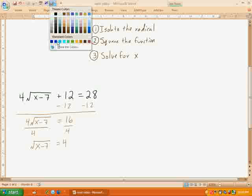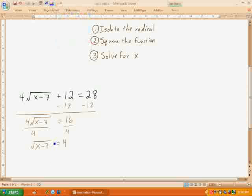And now since the radical is all by itself, that means I'm going to do step number 2. I'm going to square the function. So I'm going to square both sides. So again, the square root and the square term will cancel each other out because they're inverses. So I'll be left with x minus 7 equals 4 squared, which is 16. And then I'm going to finish up by solving for x. In this case, that means add 7 to both sides.